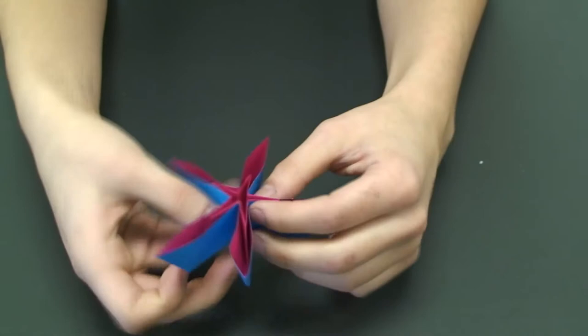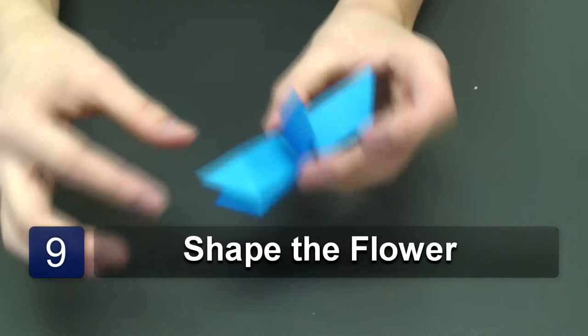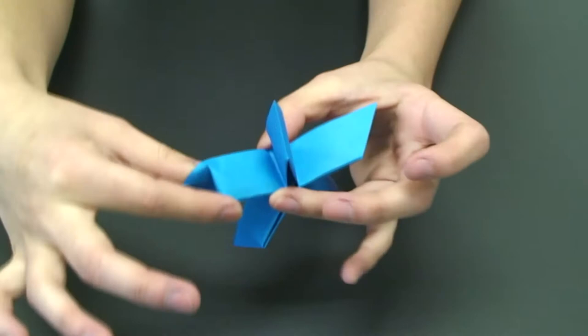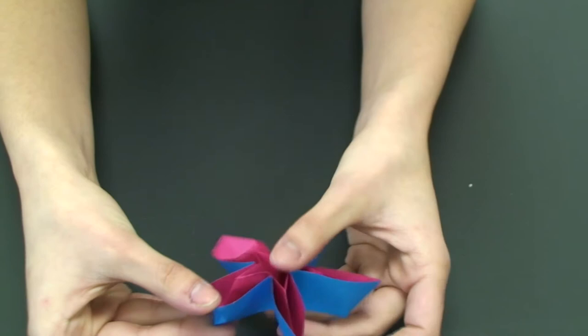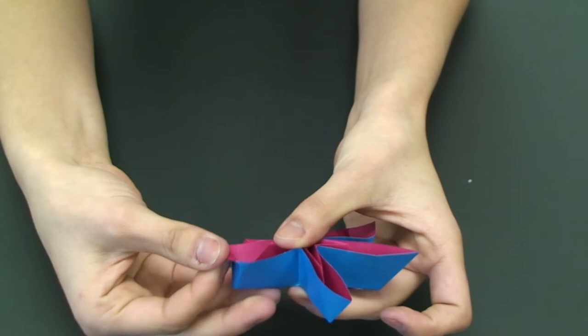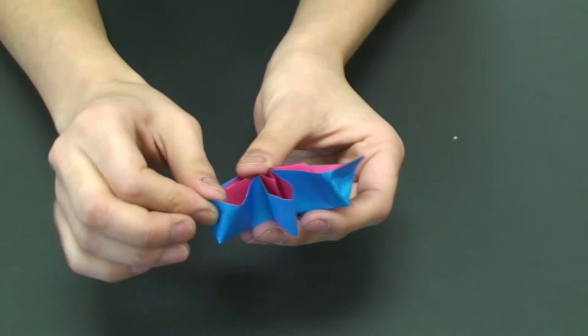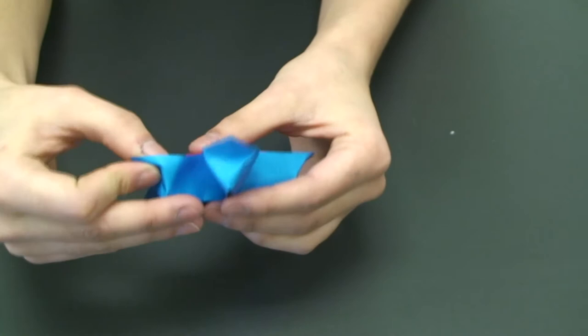And now we're going to shape our flower. So we're going to start by taking each of these points. You just insert your finger, fold it, grab the bottom and push it downwards. Here we go.